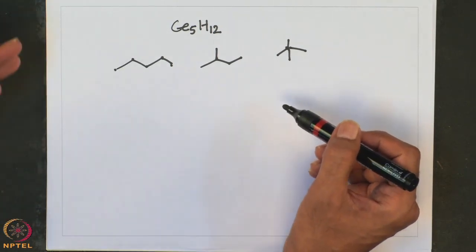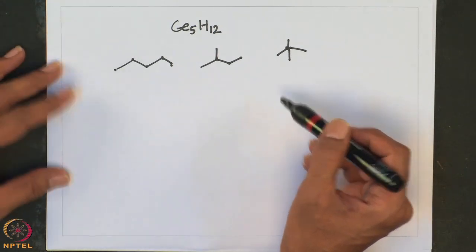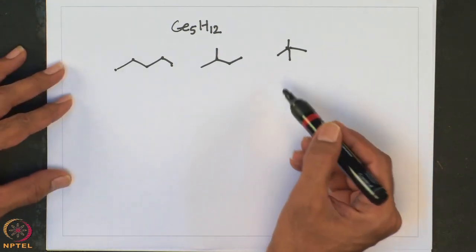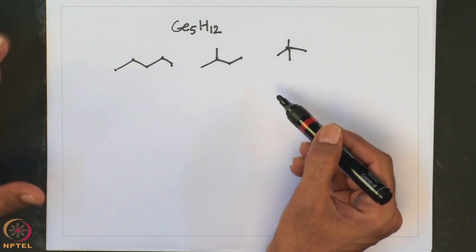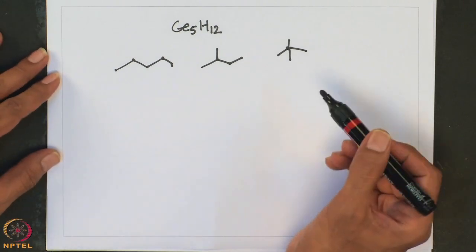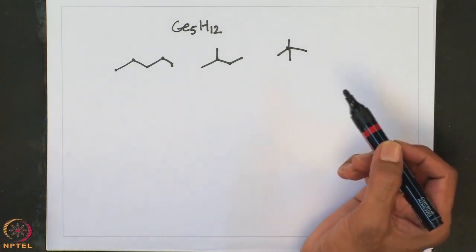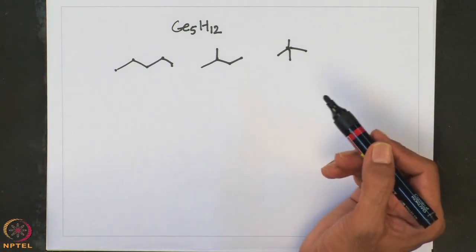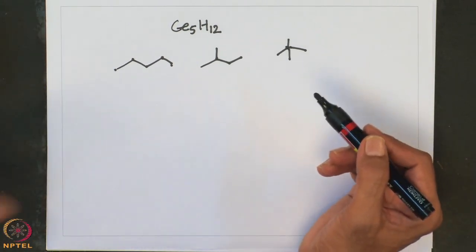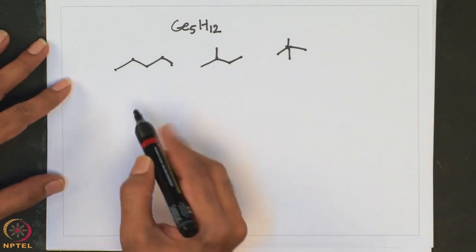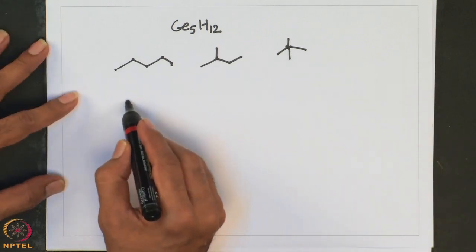Similarly, if you take pentane one can write 3 isomers. Now let us look at the oxidation states of some group 14 elements in the following compounds.